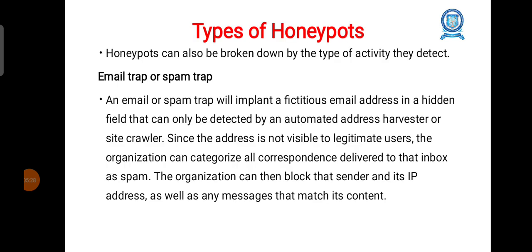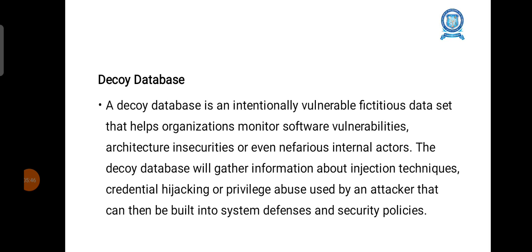An email trap or spam trap implants a fictitious email address in a hidden field that can only be detected by an automated address harvester or site crawler. They are used to identify attacker activities. A decoy database is an intentionally vulnerable data set that helps organizations monitor software vulnerabilities.